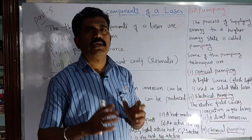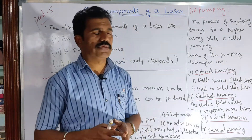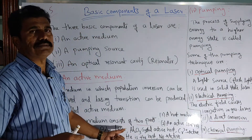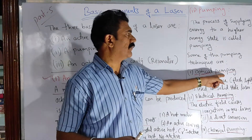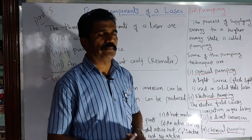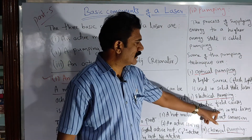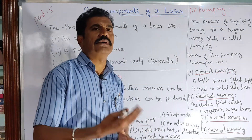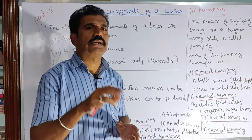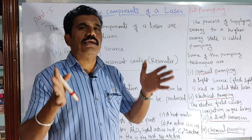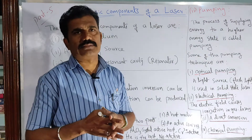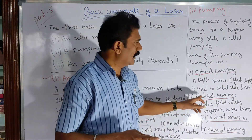In optical pumping, a light source or flashlight bulb is used — for example, in ruby laser, which is a solid state laser, the technique of optical pumping is used for excitation of the active centers. The second is electrical pumping, in which the electric field causes ionization in the gas laser. The active centers get ionized after applying an electric field between two electrodes, achieving ionization in the gas.